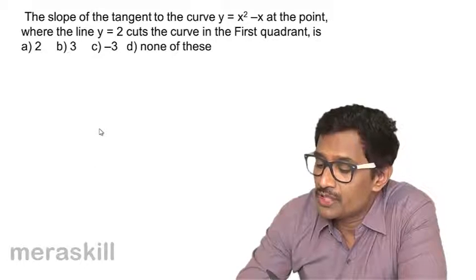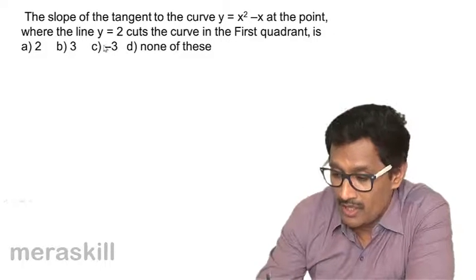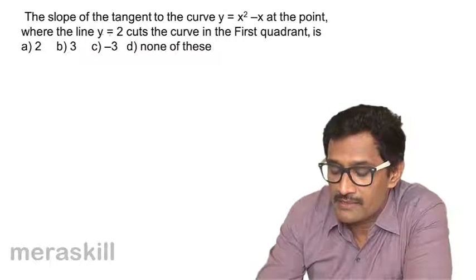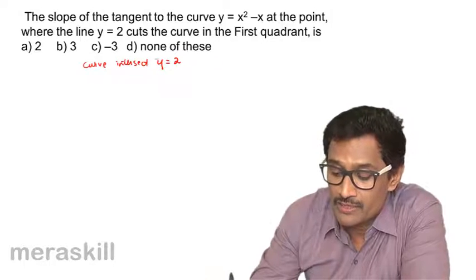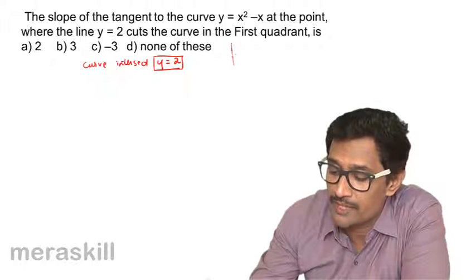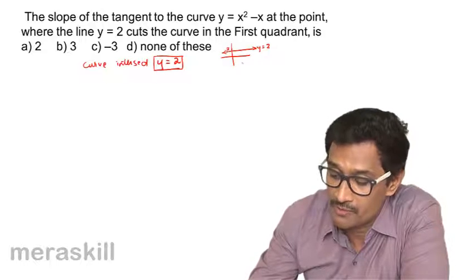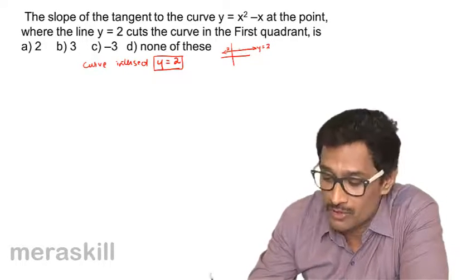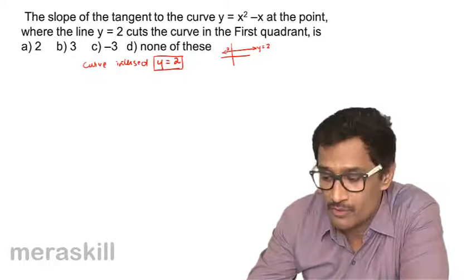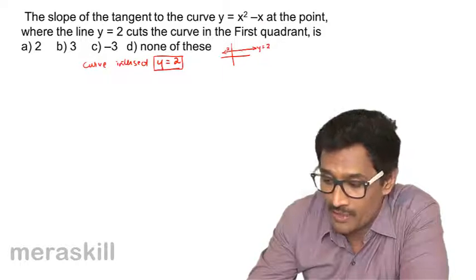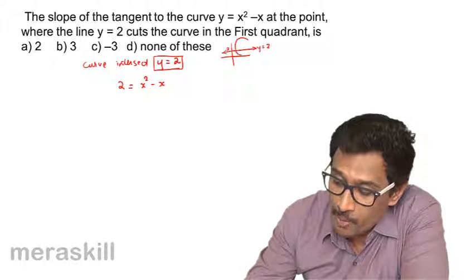Now we find the slope of the tangent to the curve y = x² - x at the point where the line y = 2 cuts the curve in the first quadrant. The curve intersects y = 2; since y = 2 is a horizontal line, any point on this line satisfies y = 2. Substituting into the curve: 2 = x² - x, giving x² - x - 2 = 0.